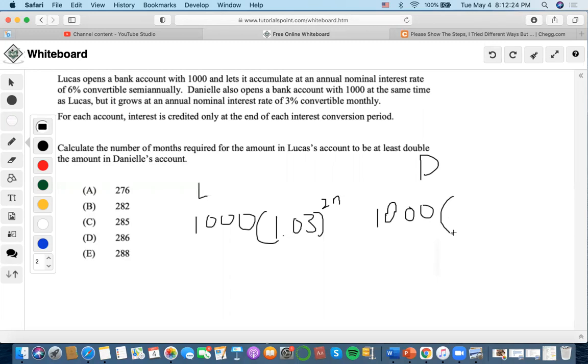3 divided by 12, which is 0.25, so it's 1.0025 to the 12N. Now it says that interest is credited only at the end of each period, and calculate the number of months required for Lucas's account to be at least double the amount in Danielle's account. So Lucas's account times 2.